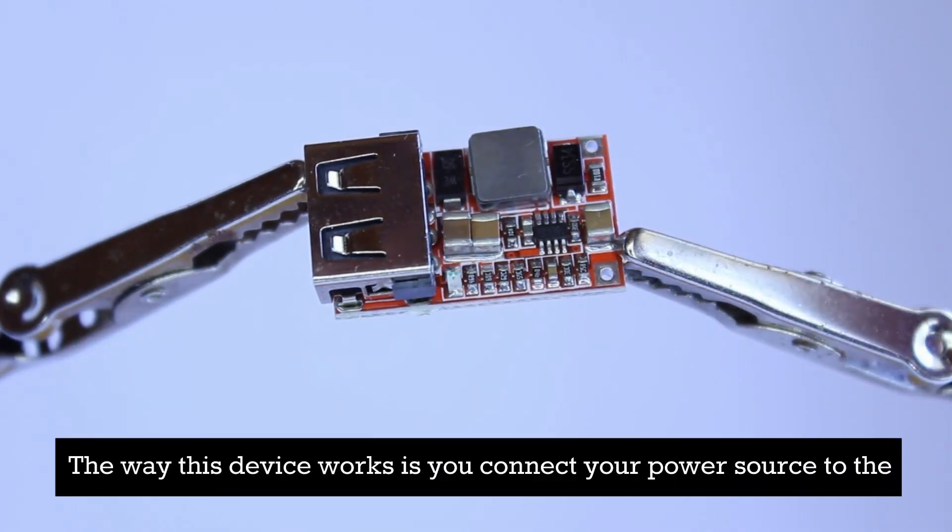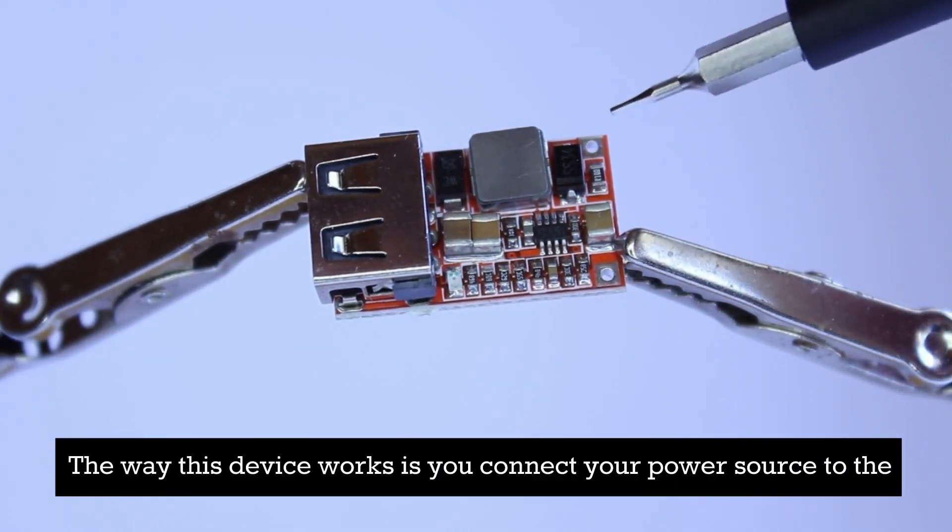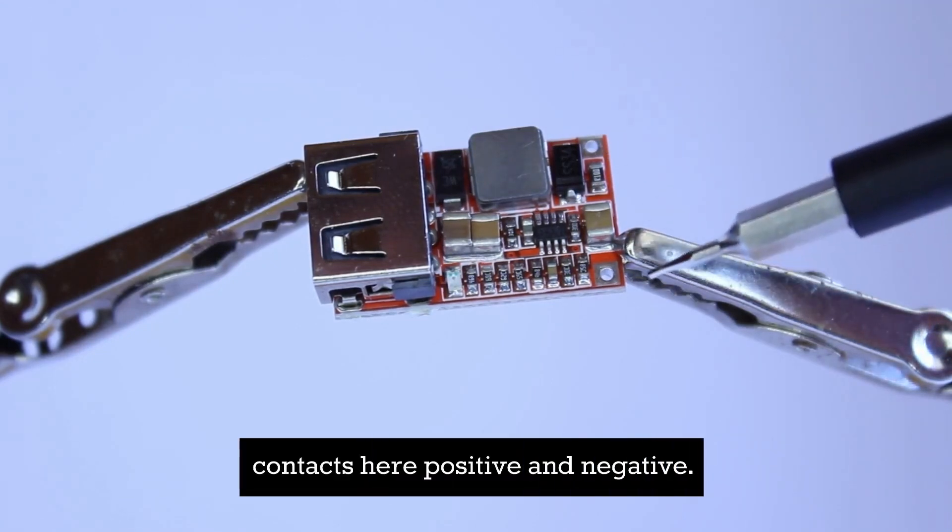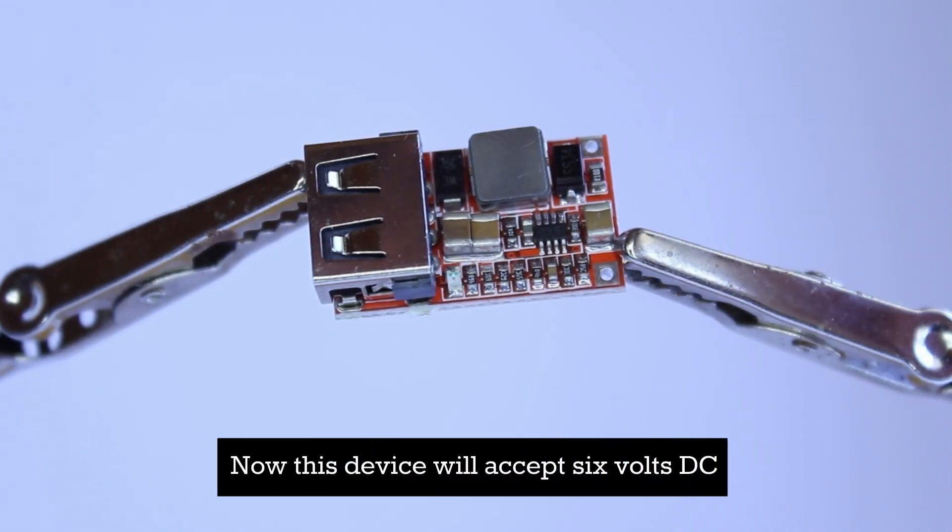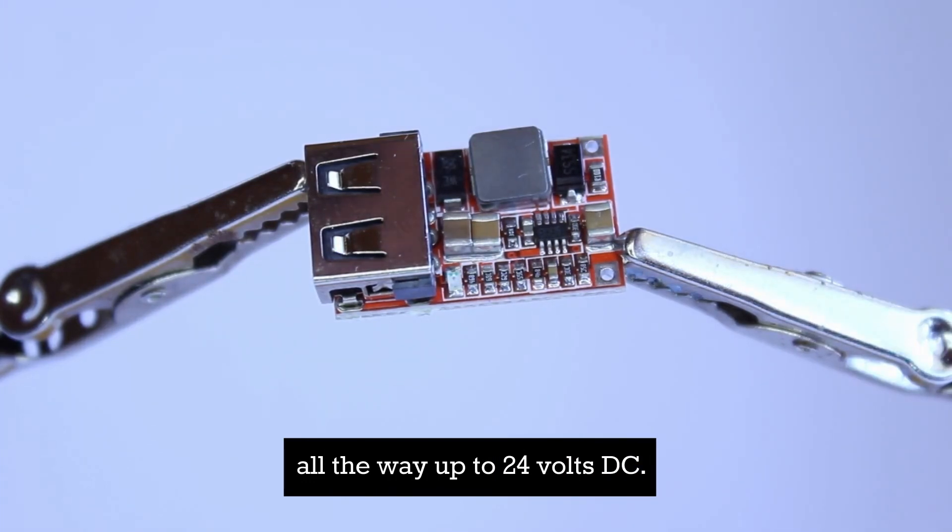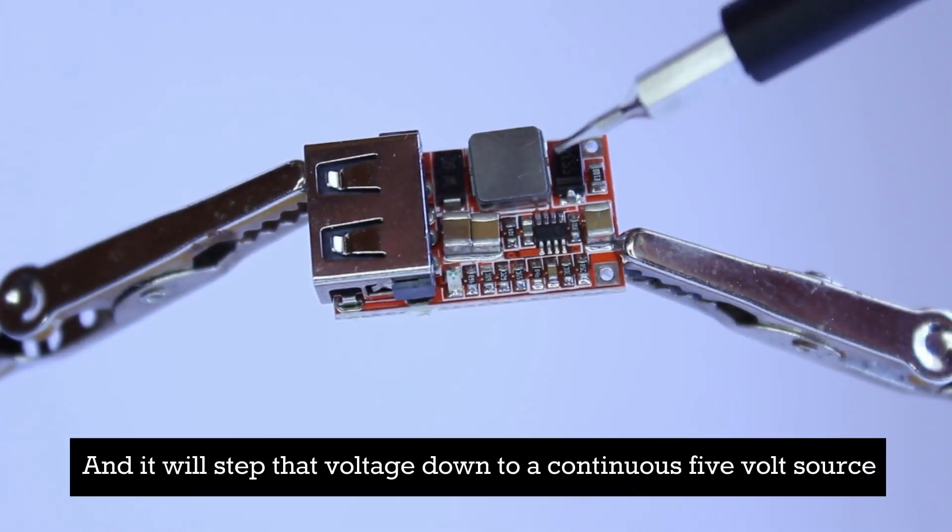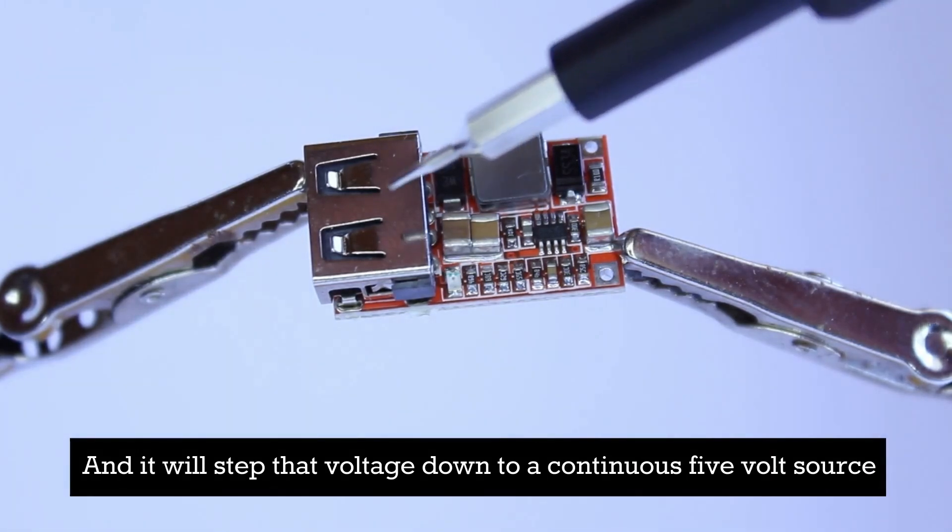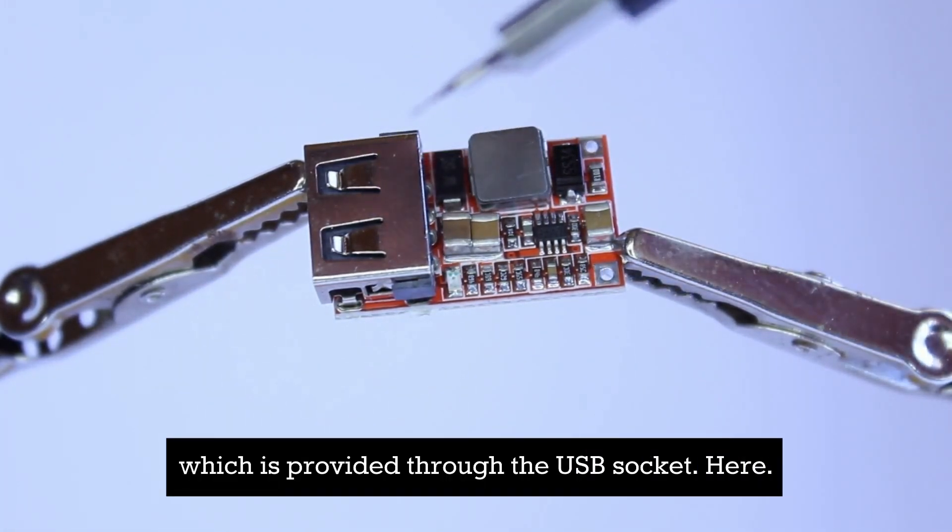The way this device works is you connect your power source to the contacts here, positive and negative. Now this device will accept 6 volts DC all the way up to 24 volts DC and it steps that voltage down to a continuous 5 volt source which is provided through the USB socket here.